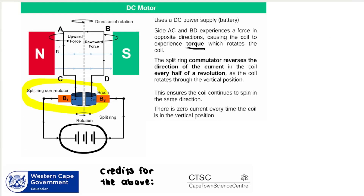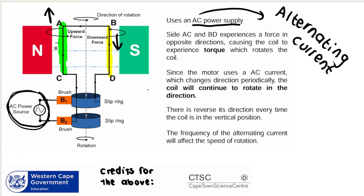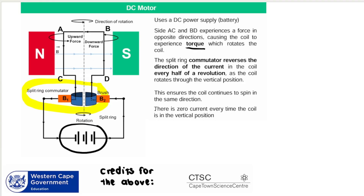The split ring commutator reverses the direction of the current in the coil every half revolution, which means the coil in a DC motor will spin in the same direction — unlike the AC motor where there's a reversal every time the coil is in the vertical position. The split ring commutator ensures the coil continues to spin in one direction using direct current.